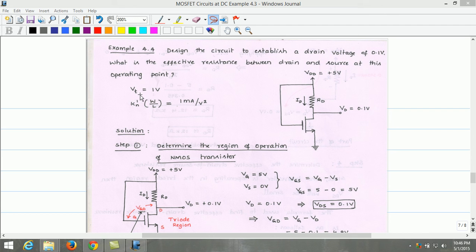The data given is threshold voltage of the MOSFET is 1 volt, KN' into W by L equals 1 milliampere per volt square. The given circuit is as shown here. Supply voltage VDD equals 5 volt. Drain voltage VD equals 0.1 volt.